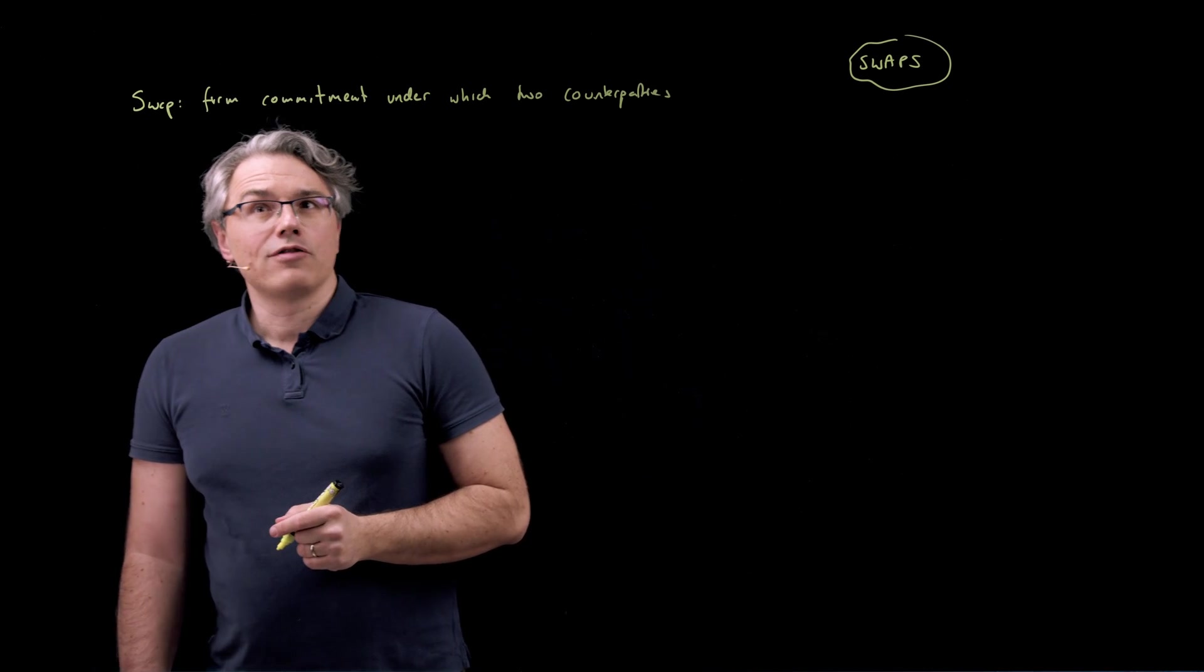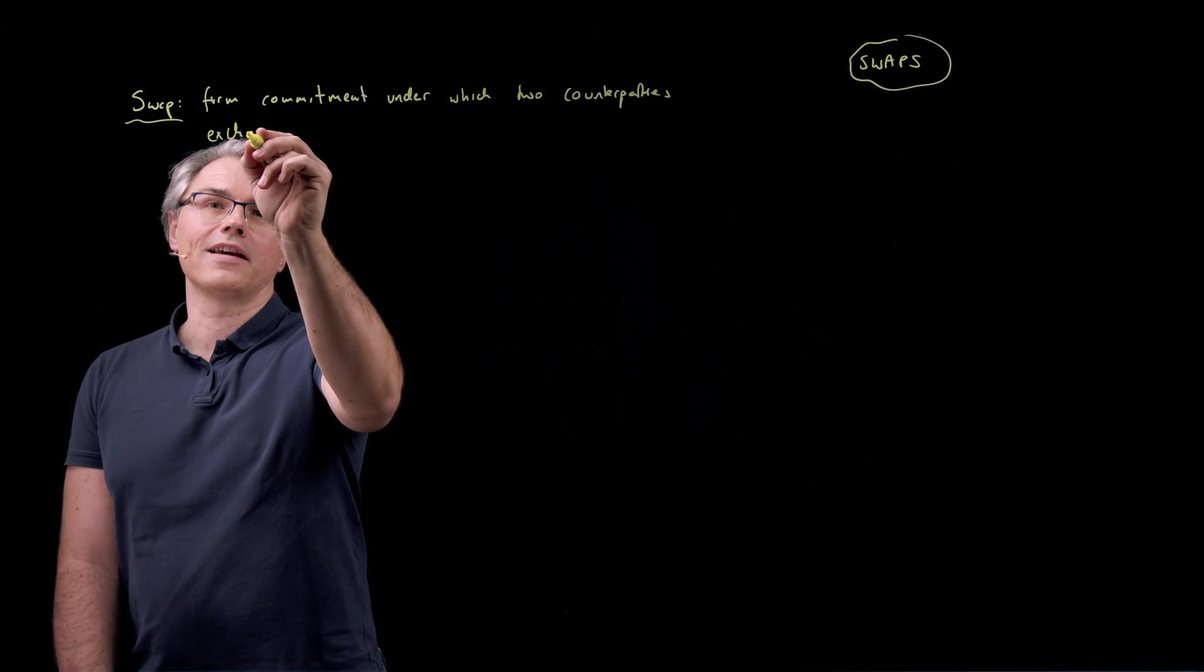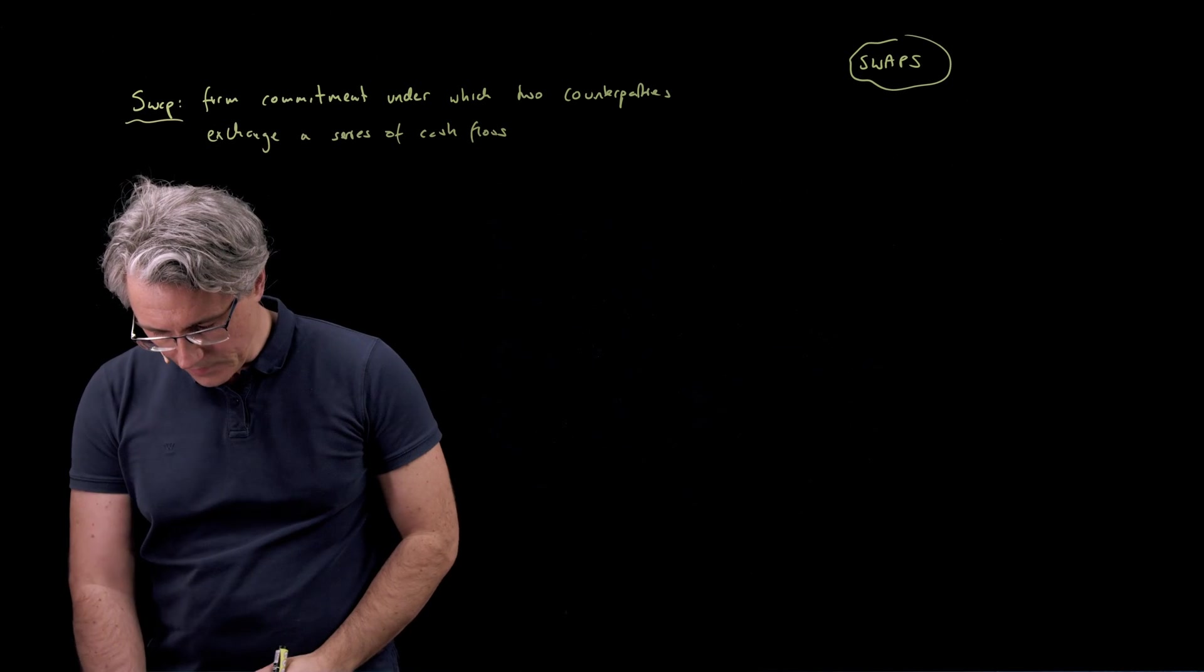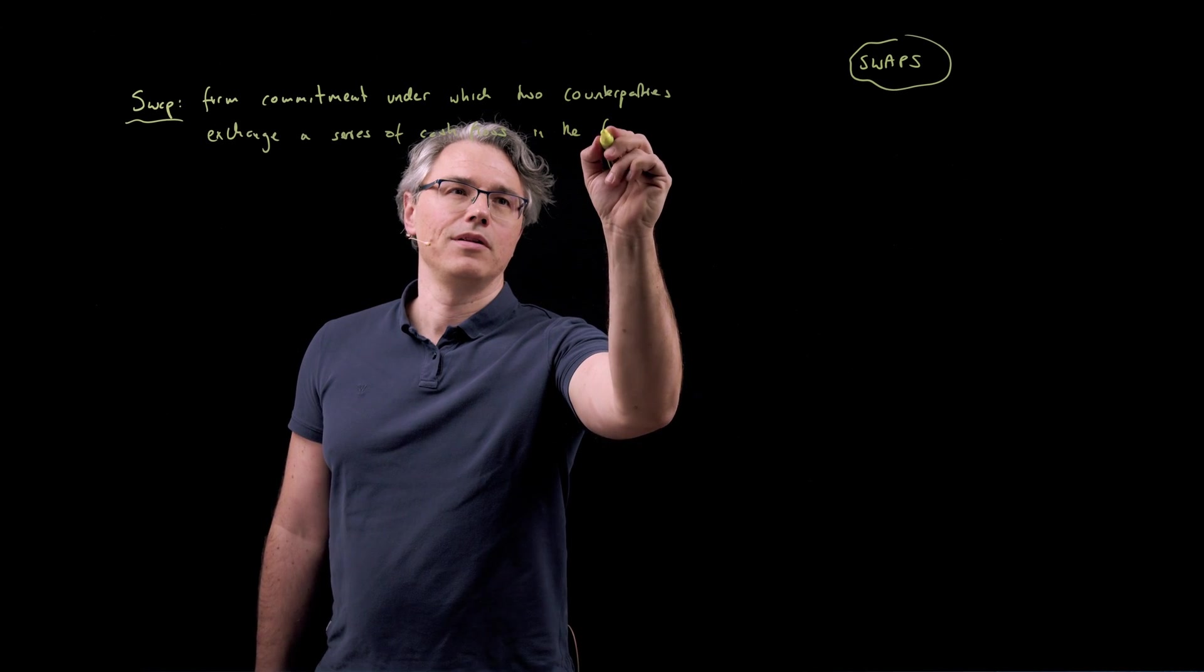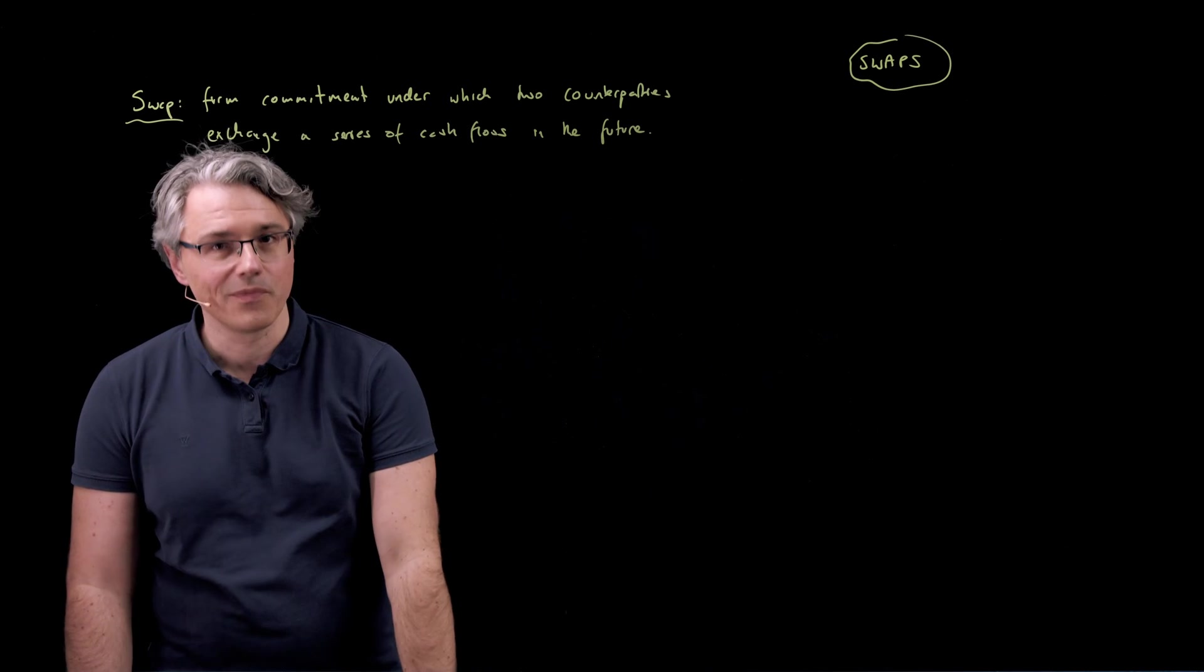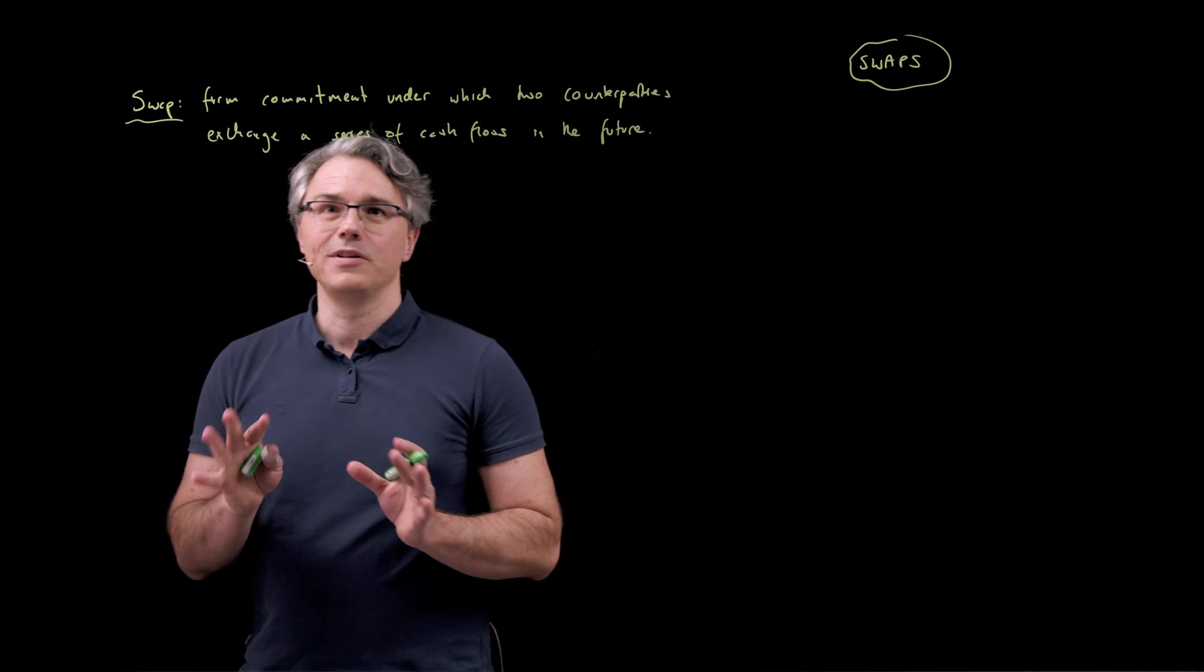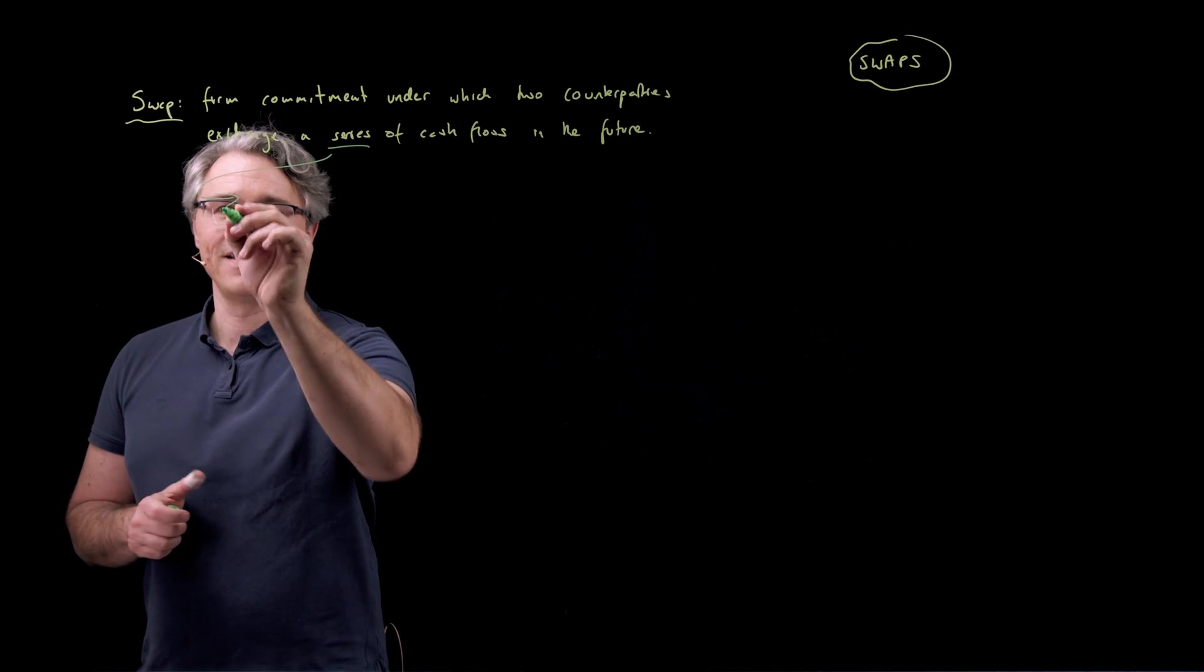exchange a series of cash flows, and it's from that exchange that we get the name swap. So they exchange a series of cash flows, obviously in the future, but not at a single point in the future, at multiple points in the future. And before I show you an example, let me stress that these cash flows, or these series of cash flows, are quite specific,